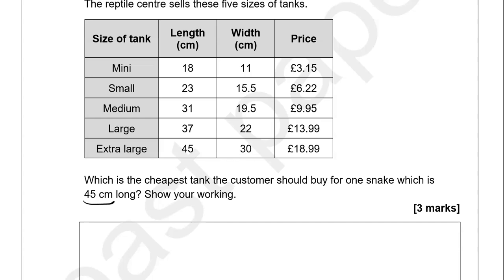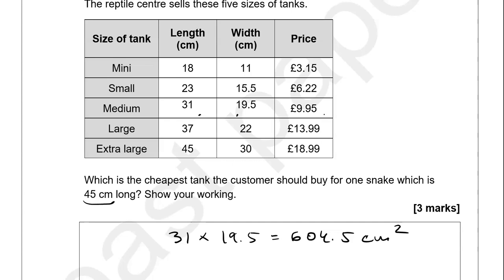Area is worked out by multiplying length by width. Trying the medium tank: 31 times 19.5 gives us 604.5 cm squared — yes, that meets the 600 cm squared requirement. Checking the smaller one: 23 times 15.5 gives us 356.5, which is not 600. So the medium tank would be the cheapest one. You could get large or extra large, but those wouldn't be the cheapest.